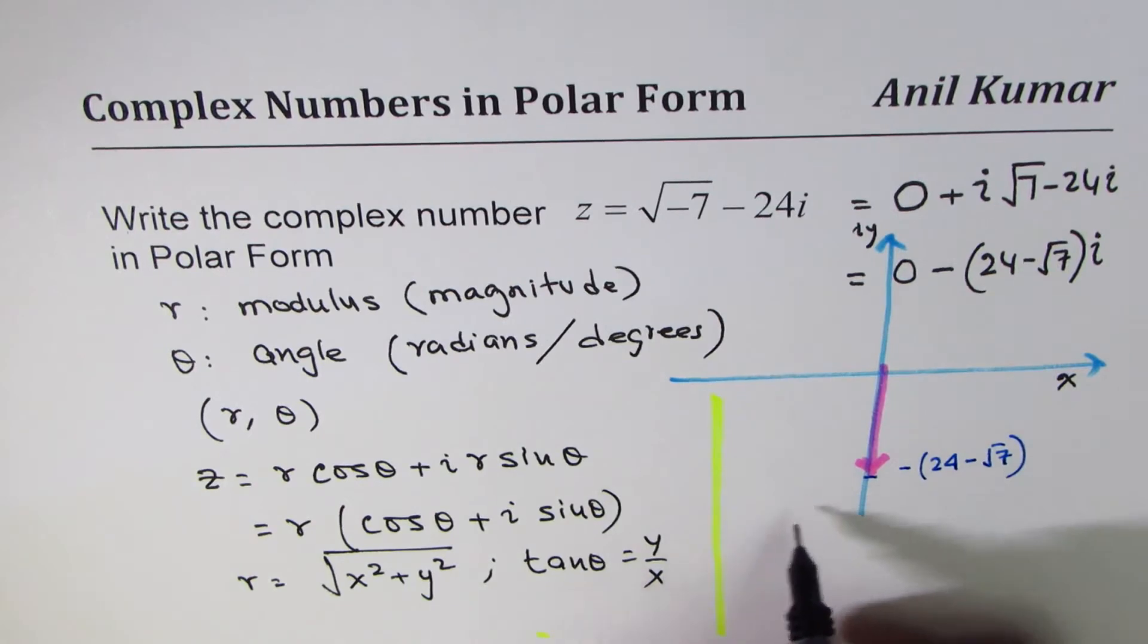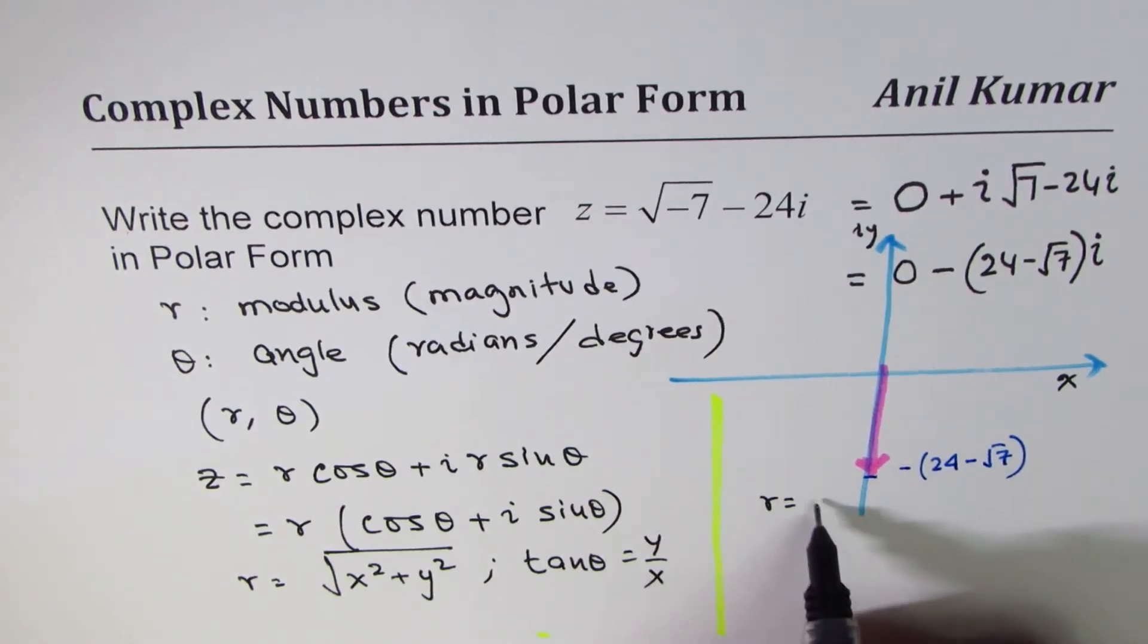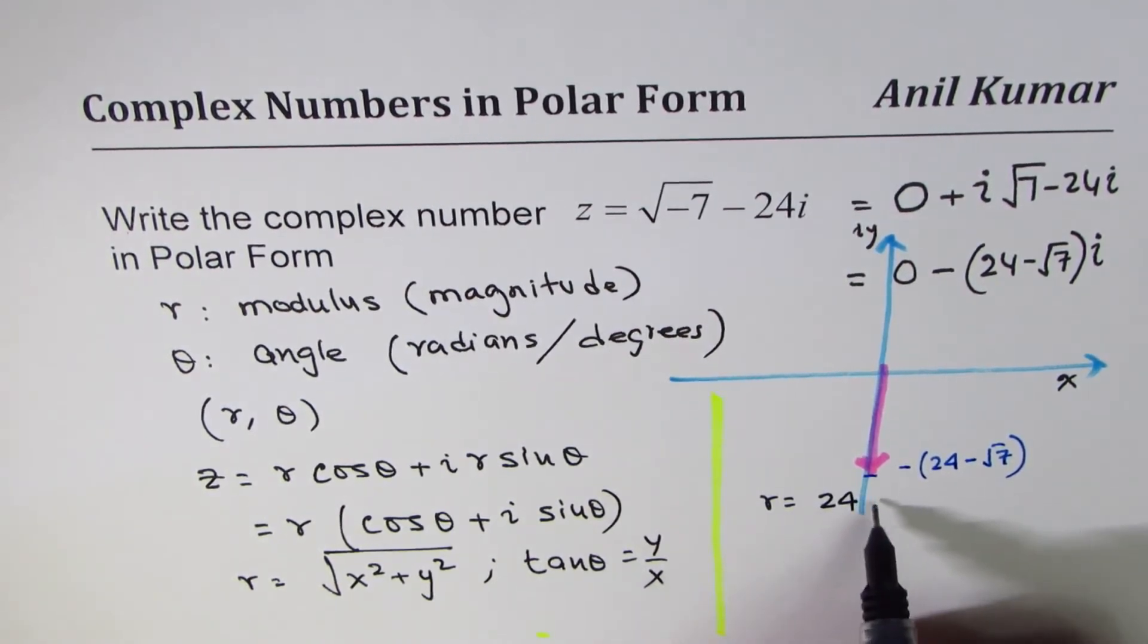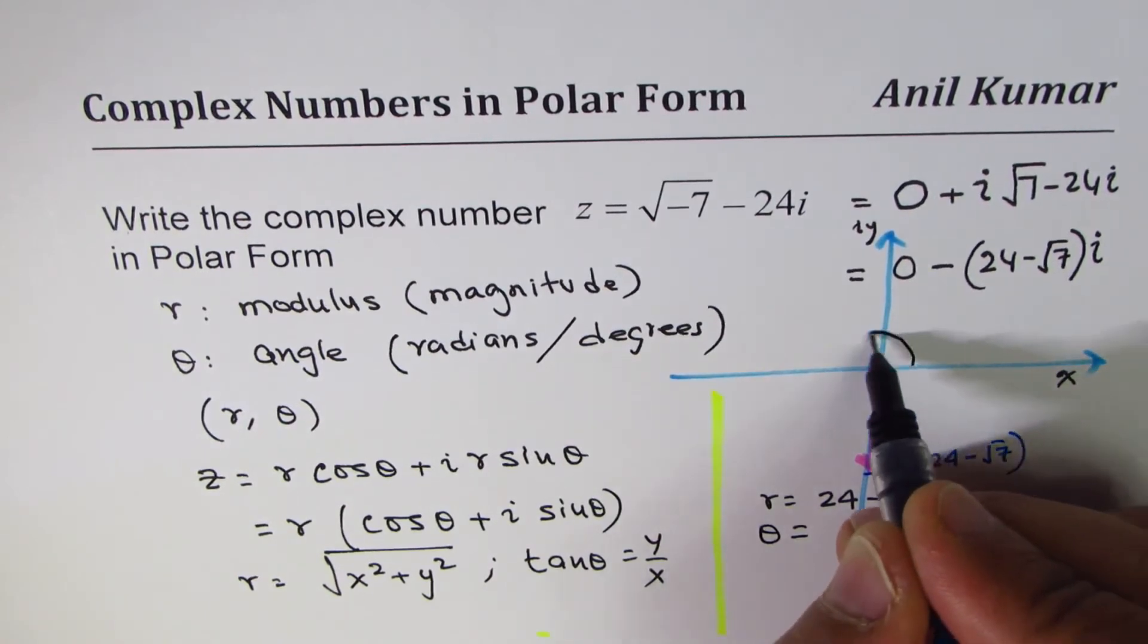So the magnitude r is: magnitude is always taken as positive, so it'd be 24 minus square root 7. That becomes the magnitude for the complex number.